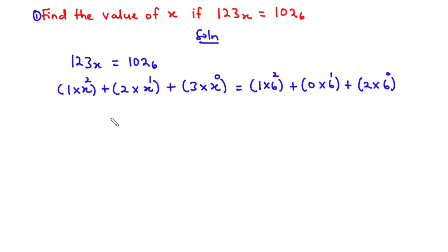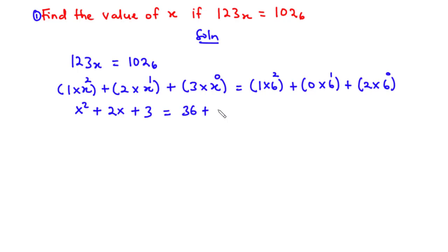Now let's simplify. x squared times 1 is x squared. x times 2 is 2x. x to the power 0 is 1, and 1 times 3 is 3. This equals 6 squared, which is 36 times 1 is 36. 6 to the power 1 is 6 times 0 is 0. 6 to the power 0 is 1 times 2 is 2. So this becomes x squared plus 2x plus 3.